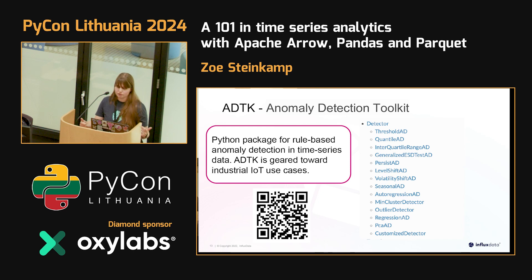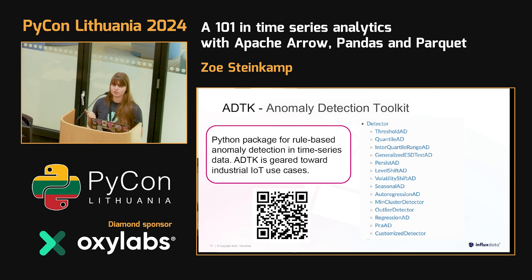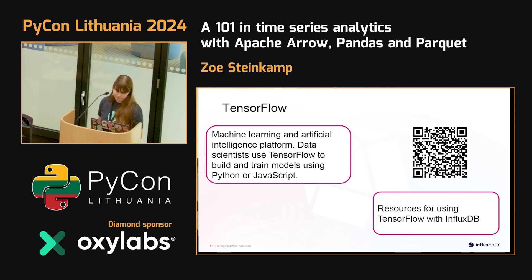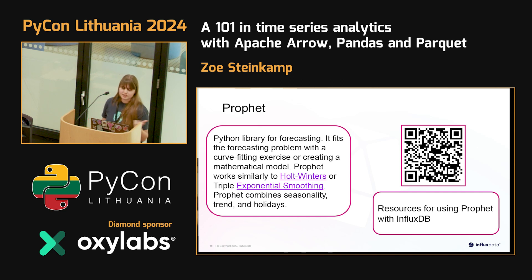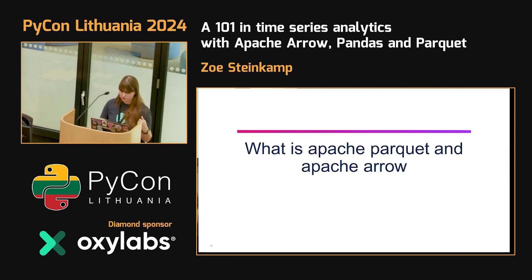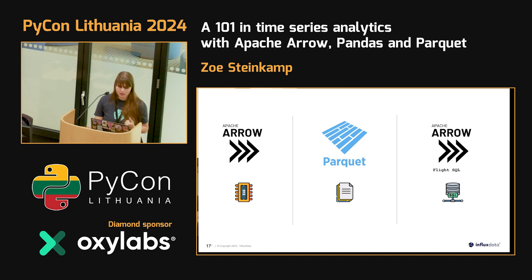One Python package worth highlighting is ADTK — the Anomaly Detection Toolkit — which is fully open source and mainly geared toward industrial IoT use cases. We have an example using auto-regression anomaly detection. We also have resources for using TensorFlow with InfluxDB for machine learning, and Prophet for forecasting. Prophet is used for time series forecasting and handles things like Holt-Winters or triple exponential smoothing, combining seasonality, trends, and holidays.